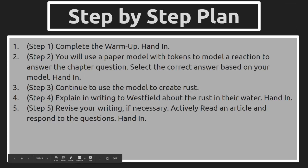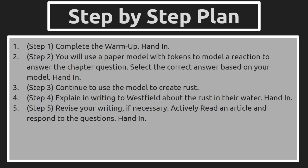Our step-by-step plan is to complete the warm-up and hand that in. In step two, you will use a paper model with tokens to model a reaction and answer the chapter question, then select the correct answer based on your model and hand that in. The paper model is available from the previous lesson or through the Classroom Lesson 2.3 folder as a PDF you can print or view on screen. Find tokens from around the house — game pieces or coins work well.